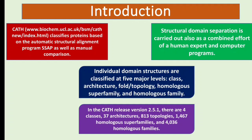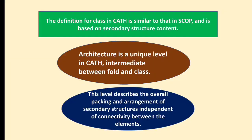The recent variant is 2.5.1. In CATH there are four classes, 37 architectures, 813 topologies, 1467 homologous super families, and 4036 homologous families. The definition of Class in CATH is similar to what we have studied in SCOP, and I will share the SCOP link so that you can recall it.